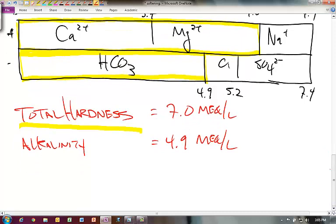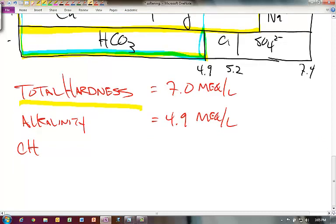Next question is the carbonate hardness. What of the calcium and magnesium is bound with the carbonate in solution? I'll put that in blue here. We're looking for this much in solution, only to this point right there. So carbonate hardness would be 4.9 milliequivalents per liter.